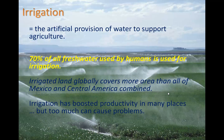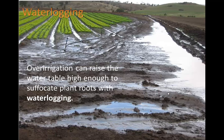Irrigation has boosted productivity in many places, but too much can cause problems. Here's one problem: water logging. It's the over-irrigation that can raise the water table high enough to suffocate plant roots. This is groundwater that has gotten so high that the water table — the top of the groundwater — is at the surface, and so plant roots are suffocated, they don't get the oxygen they need, and plants can die.